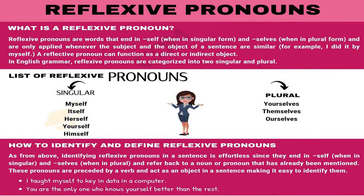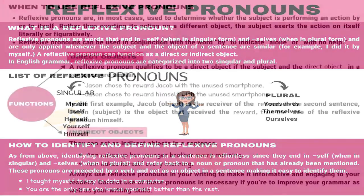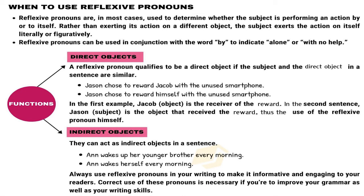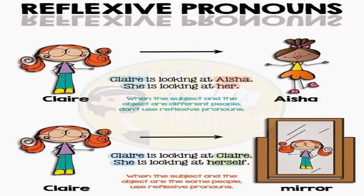Moving on to reflexive pronouns. Reflexive pronouns are words that end in 'self' in singular form and 'selves' in plural form. It is only applied whenever the subject and the object of a sentence are the same. It is categorized into singular and plural. As you can see on your screen, a reflexive pronoun can function both as a direct or an indirect object. An example is: 'Claire is looking at herself' or 'She is looking at herself.' Here, both the subject, Claire or she, and the object, herself, are the same.